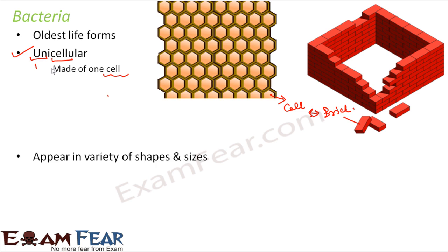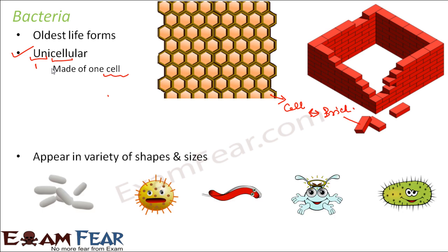Bacteria appear in a variety of shapes and sizes. Some of them are spherical, some are cylindrical as you can see here, and some are elongated. So a variety of shapes are available in case of bacteria, and looking at their shape or size alone, you cannot tell if an organism is a bacterium.